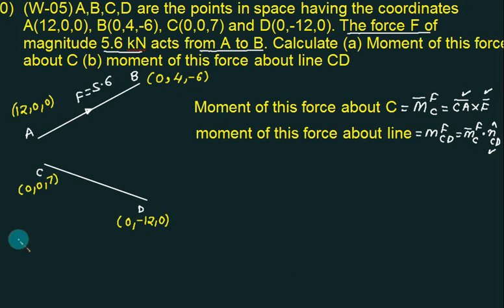One by one, what is CA bar? CA bar is A minus C, 12 minus 0, 2 minus 0, 0j, 0 minus 7, minus 7k.